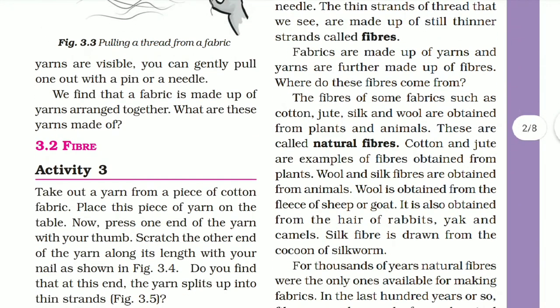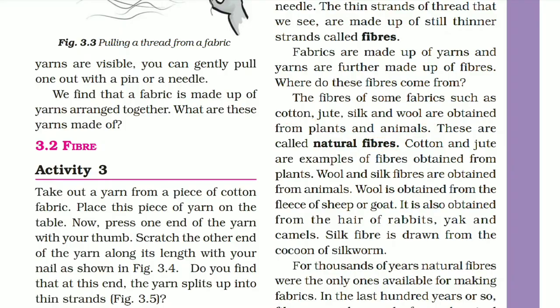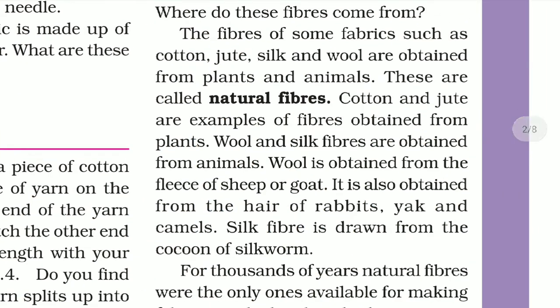Next, we are told that the fiber of some fabrics — such as cotton, jute, silk, and wool — are obtained from plants and animals. These are called natural fibers. Cotton and jute are examples of fibers obtained from plants. Wool and silk are fibers we get from animals.